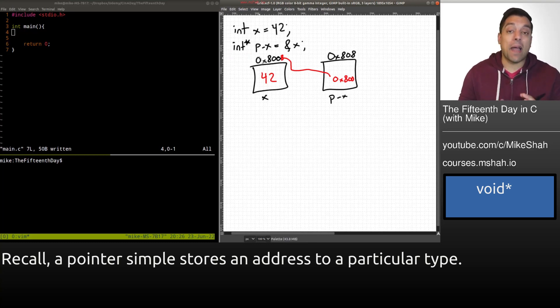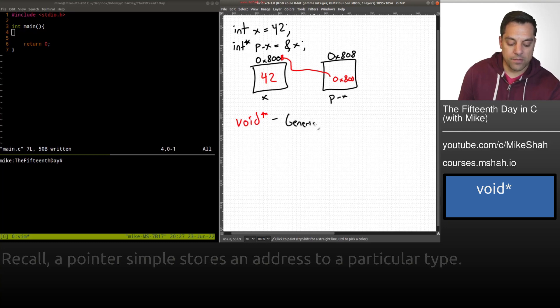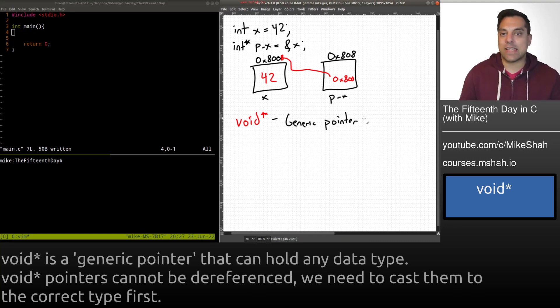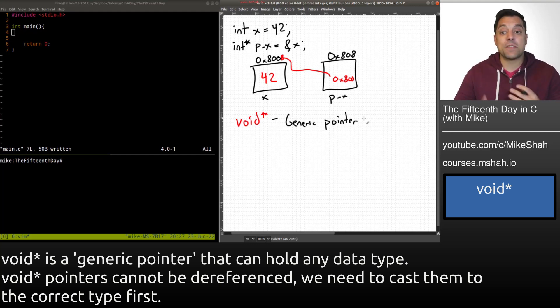Now, something that's quite powerful that we can get away with in C is actually creating what's known as a void star. And that would be a sort of generic pointer. So let's just go ahead and label this generic pointer. For those of you who've done programming in other languages like Java or C++, you know about things like generics.